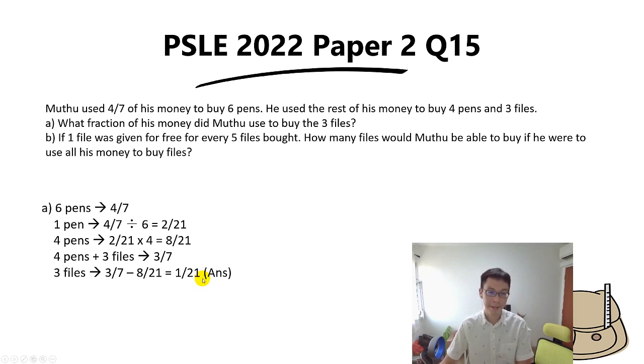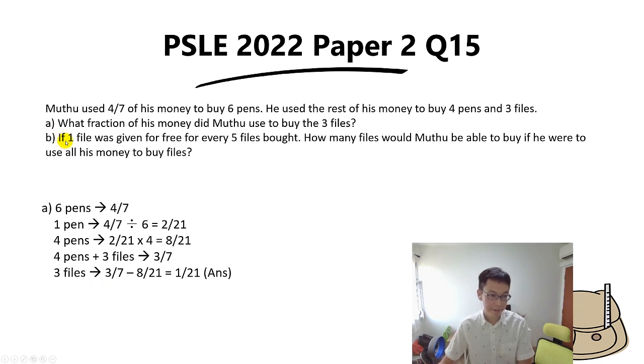So 1/21 is the answer for Part A — the fraction of his money used to buy the three files.